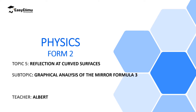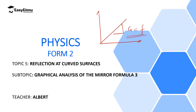Welcome to ECLIMU Learning Simplified. In the previous lesson, we discussed a graph of uv against u plus v, and we said that the graph is a straight line graph starting from the origin, and the gradient of this graph gives us the focal length of the mirror — that is uv against v plus u.